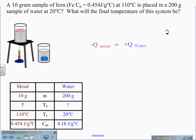Our equation for this will be negative Q for the metal. The quantity of heat lost by the metal will be equal to the positive Q of the water, the amount of heat gained by the water.